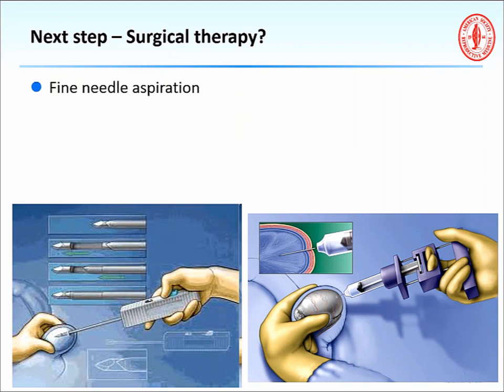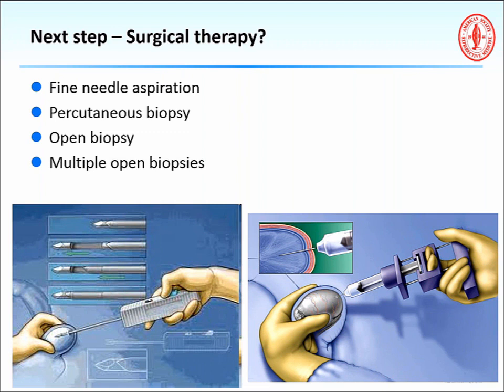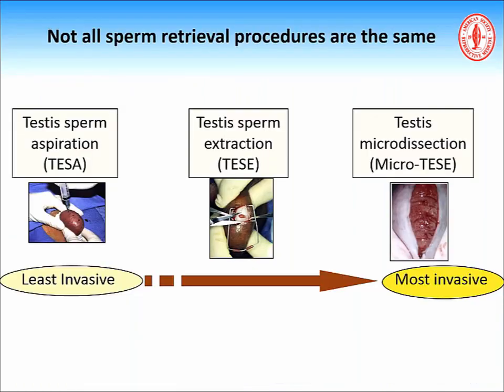Surgical therapy options for sperm retrieval include fine needle aspiration, percutaneous biopsy, open biopsy, and multiple open biopsies, as well as microdissection TESE. Not all sperm retrieval procedures are the same — testis sperm aspiration is the least invasive and microdissection TESE is the most invasive. Despite being the most invasive, it is also the most successful based on reported data.